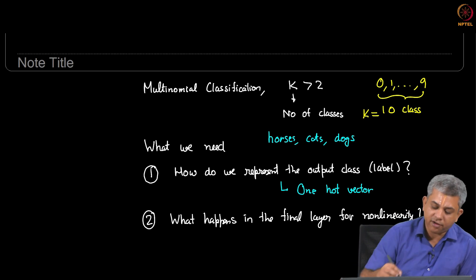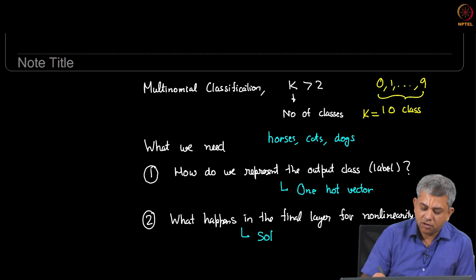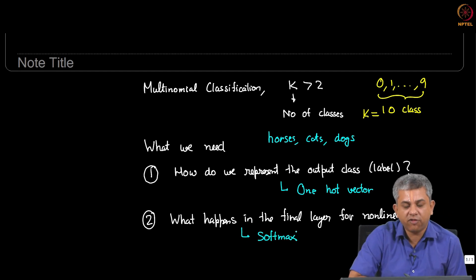So we will be looking at a function called the softmax function which actually corresponds very well with the one hot vector.